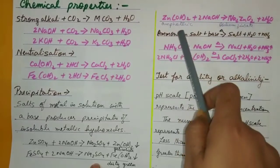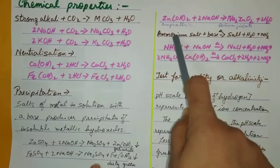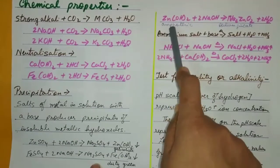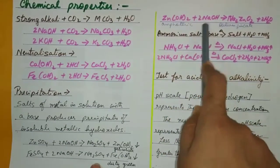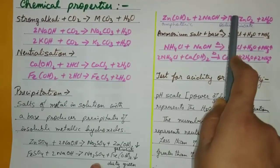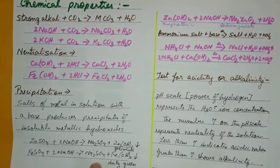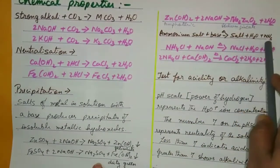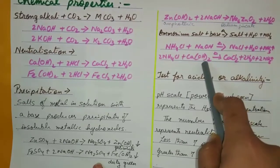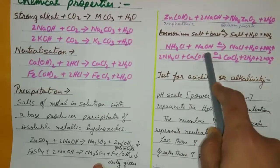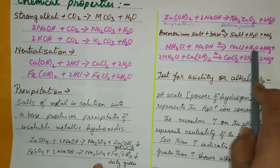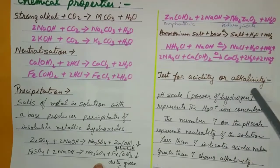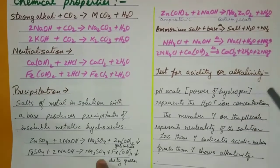Amphoteric metallic hydroxides react with a base, giving a salt — for example, sodium zincate and water. Ammonium salt with a base gives salt, water, and ammonia. Ammonium chloride and sodium hydroxide gives salt, water, and ammonia gas is released.